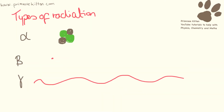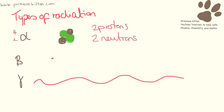We now know that there are three different types of radiation: alpha, beta, and gamma. Alpha radiation has a mass of four and an atomic number of two. It has two protons and two neutrons. Going back to our periodic table, something that has a mass of four and an atomic number of two is a helium nuclei — helium with no electrons. So that's an alpha particle.